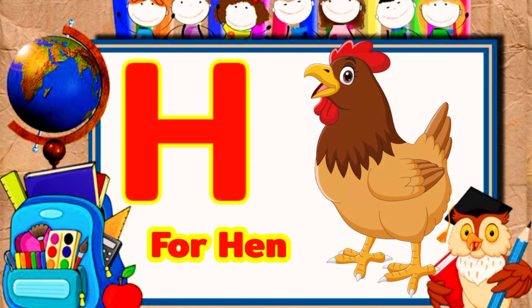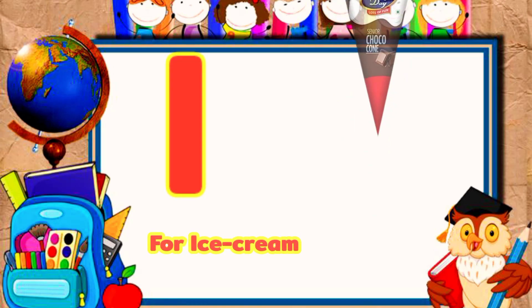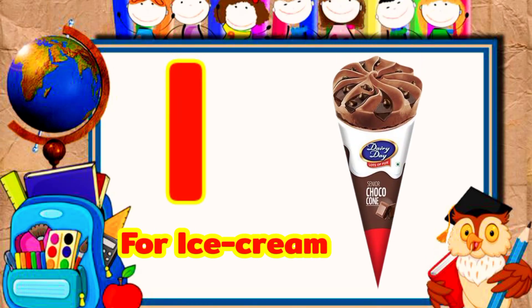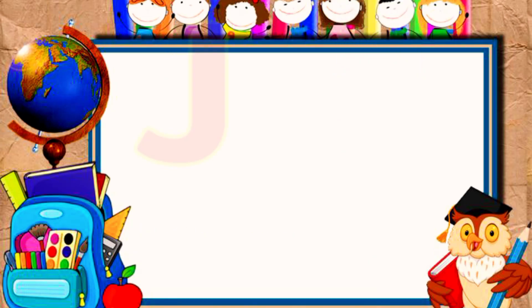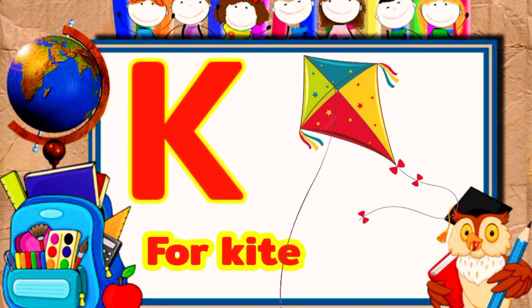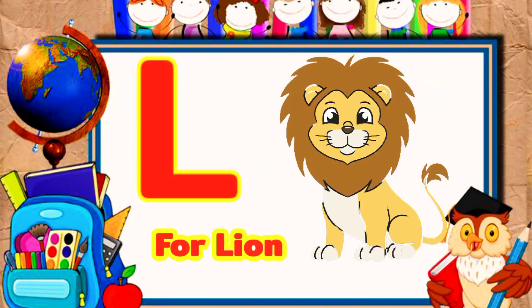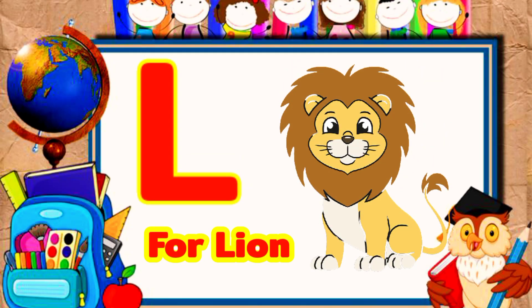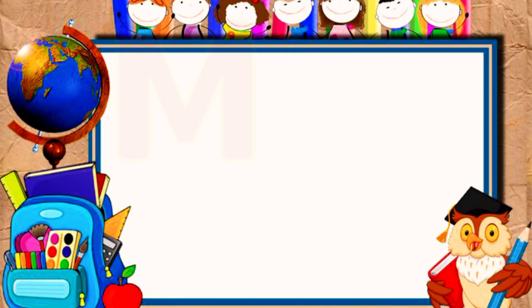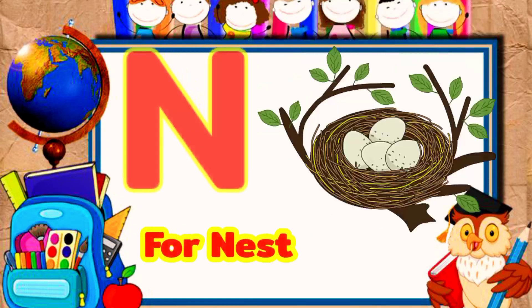F for head, I for ice cream, J for joker, K for pine, L for lion, M for monkey, L for nest.